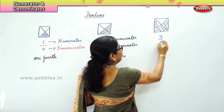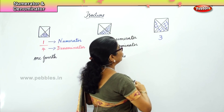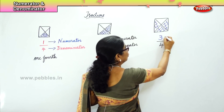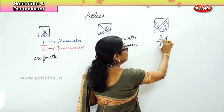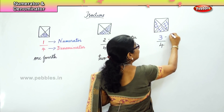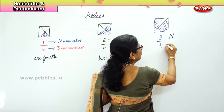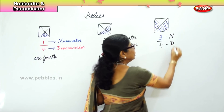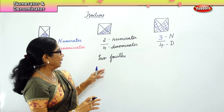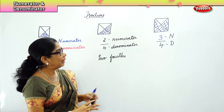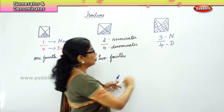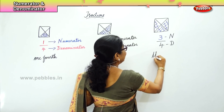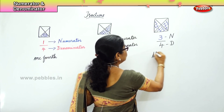You will write 3 parts out of 4 parts — 3 by 4. What do we call this top number? Numerator. And we call the 4 as denominator. How do we write this? 3 fourths.